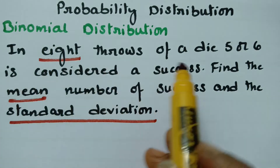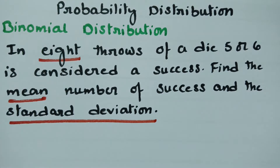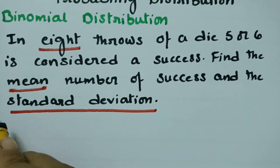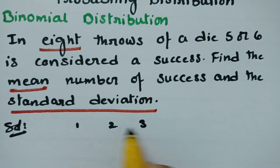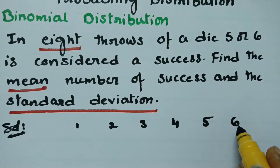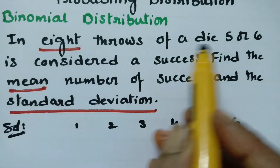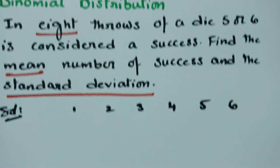In this question, in 8 throws of a die, 5 or 6 is considered a success. On a die, there are 6 numbers: 1, 2, 3, 4, 5, and 6. The chance of getting 5 on the die is 1 by 6, and the chance of getting 6 on the die is also 1 by 6. So getting 5 or 6 on the die is 1 by 6 plus 1 by 6.